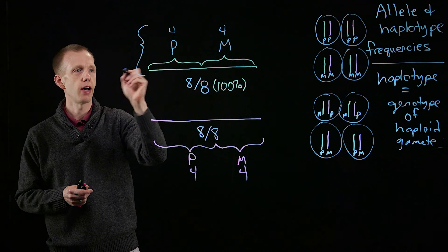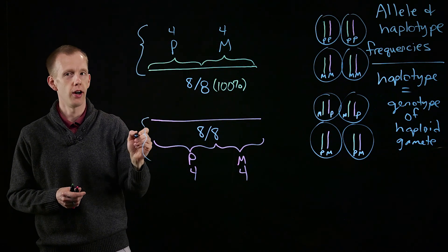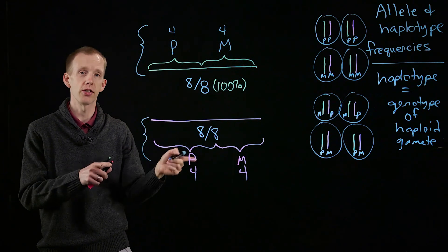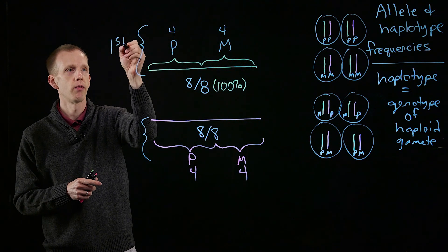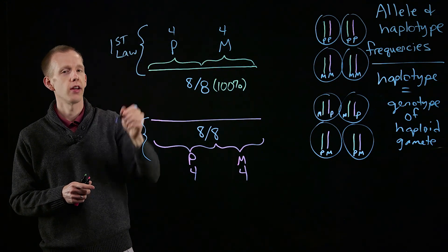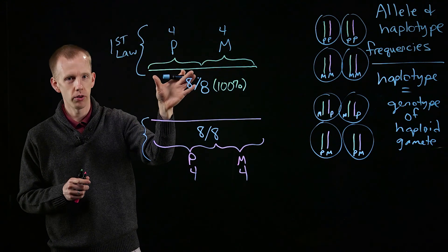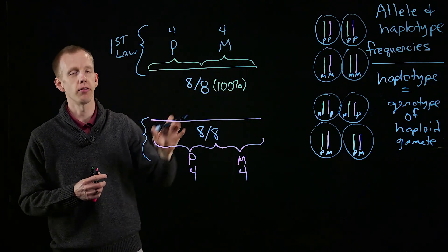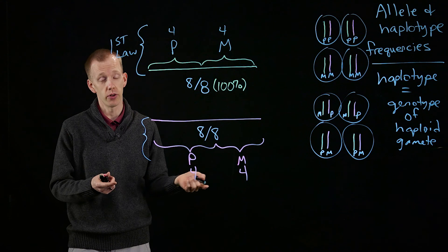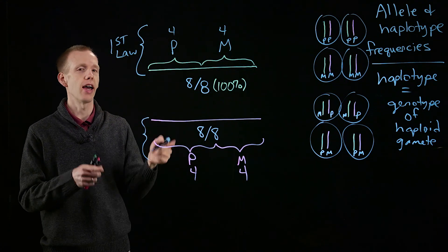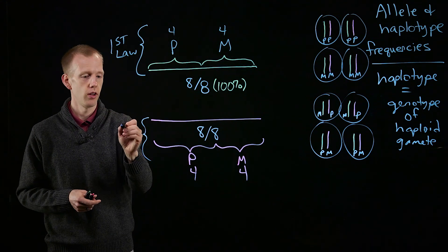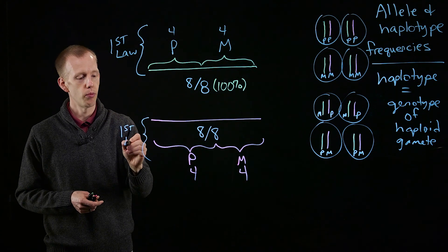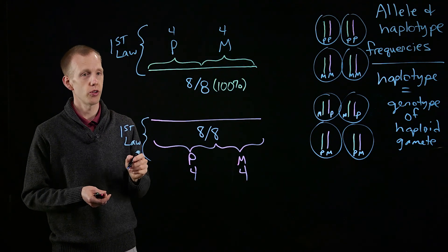These relationships have entirely to do with Mendel's first law, the segregation of alleles into gametes. That is, half of the gametes get the paternal version, or one allele, of every chromosome, and the other half of the gametes, or cells during cell division and meiosis, get the other half, the other allele.